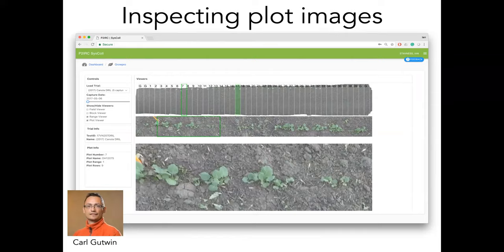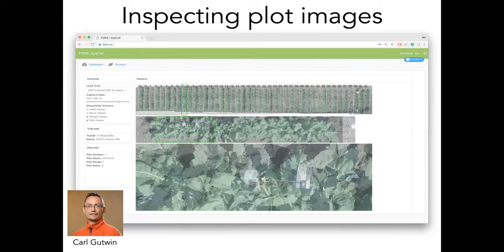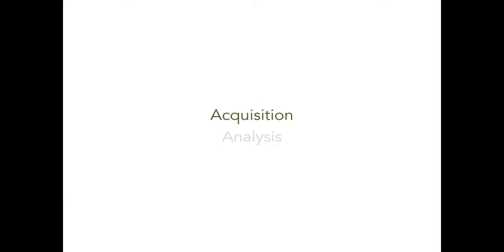In addition to analysis, we think it's important to provide pictures back to plant breeders, so we've developed a web tool for inspecting row-based images. It shows an overview of the whole range along the top, a picture of the whole row in the middle, and a zoomed-in picture below. Plant breeders can cycle through images over the season to see how each individual plot progresses.